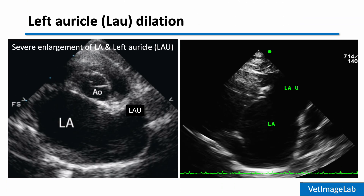It's important to assess not only the left atrium, but also the left auricle, because as left atrial enlargement progresses, the auricle often becomes enlarged as well. You can see here a markedly enlarged left auricle alongside the dilated left atrium.